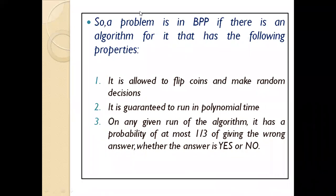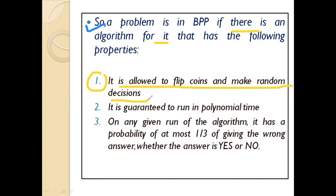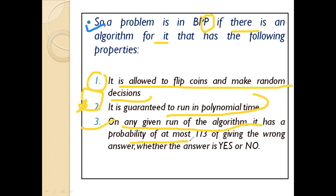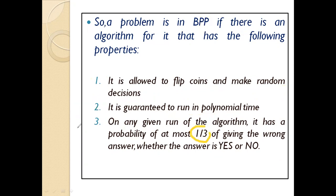We can summarize: if a problem is in BPP, then there is an algorithm for it with a few key properties. First, it is allowed to flip coins and make random decisions. Second — the important part — it is guaranteed to run in polynomial time. Third, on any given run of the algorithm, it has a probability of at most one-third of giving the wrong answer, whether the answer is yes or no. I hope the BPP concept is now clear.